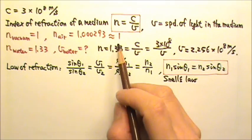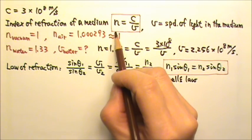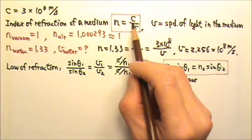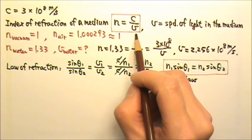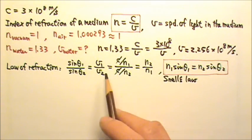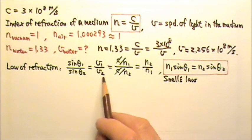For light, we usually talk about the index of refraction of a medium instead of the speed of light in that medium. So for light, we usually use the Snell's law instead of the law of refraction in this format.